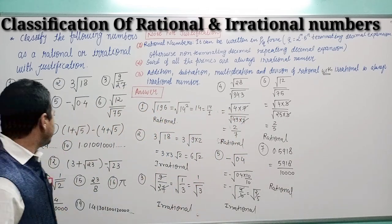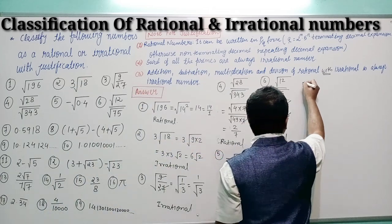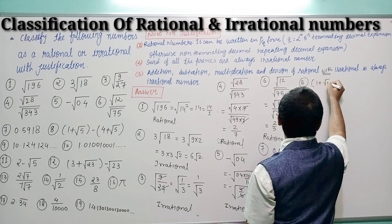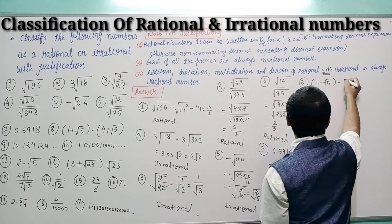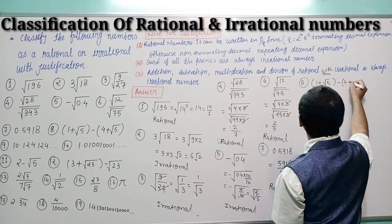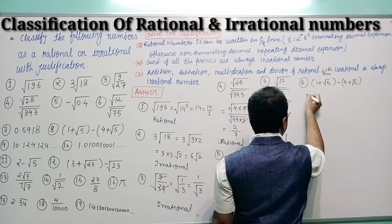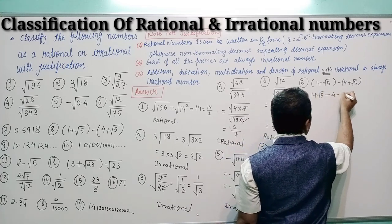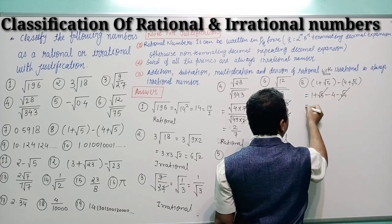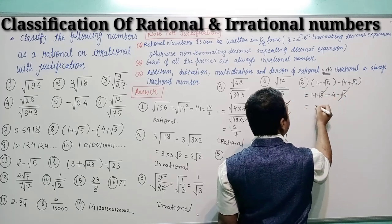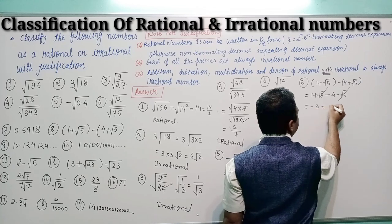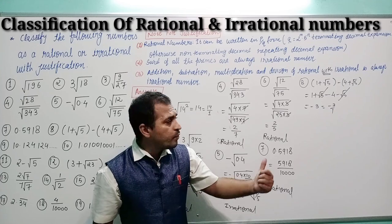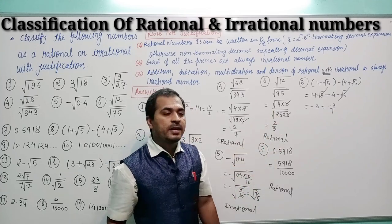Question number 8: (1 + √5) − (4 + √5). Removing the bracket gives 1 + √5 − 4 − √5. The √5 terms cancel, leaving 1 − 4 = −3, which can be written as −3/1. It can be expressed in p/q form, so question number 8 is rational.